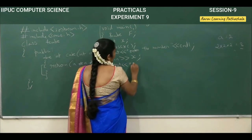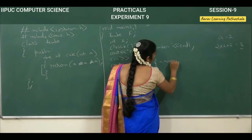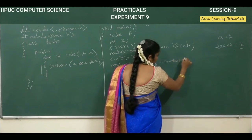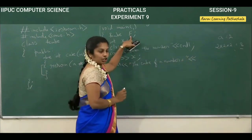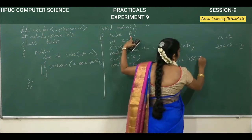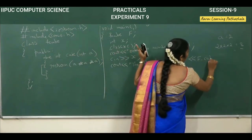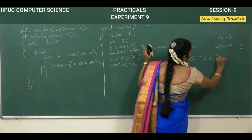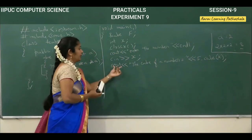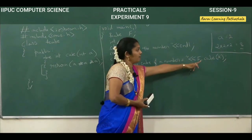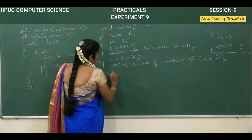Next, we call the function using cout with insertion operator: 'the cube of a number equals', then insertion operator, then f.cube(x). With the help of the object f, we call the function cube and pass x as the argument. This will display the cube of the given number. Then getch, and close the main program.